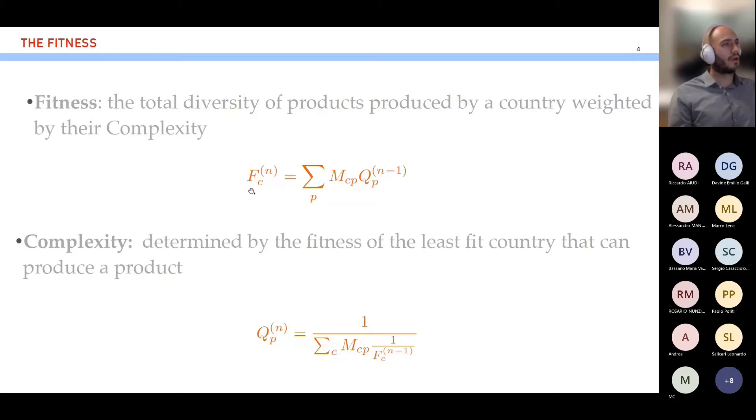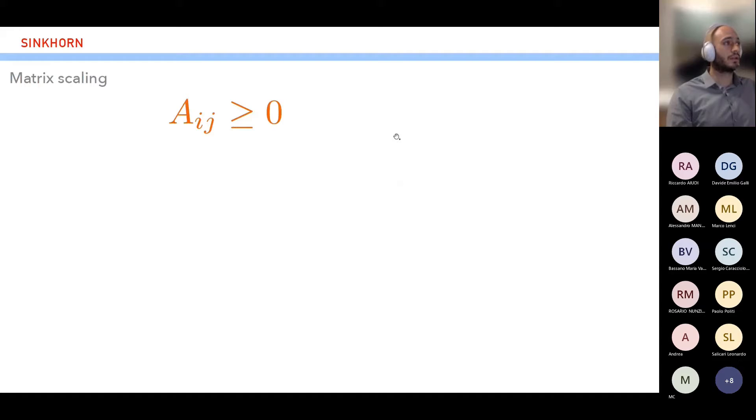One classic question in economic complexity is how to measure the technological level of the productive system of countries and how to measure the complexity of products. Countries tend to produce everything they can given some technological level of the productive system. And there are some complex products that can be produced and exported by few countries, while some more simple products can be exported by many countries. So how can we measure these two quantities? Well, Luciano Pietronero's group invented this algorithm. It was constructed heuristically just from the MCP matrix, where we have the fitness of countries and the complexity of products. Fitness of countries is just the sum over all the complexity of the products that are exported by the country, while the complexity of products is related to the least-fitness countries that export that product.